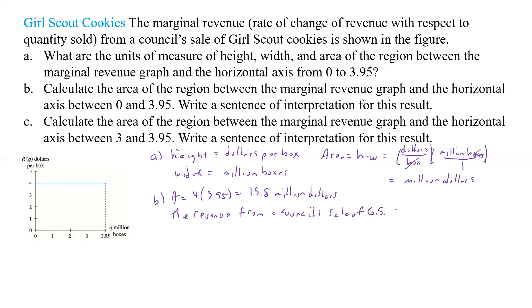So what does that mean? The revenue from a council sale of Girl Scout cookies from selling 3.95 million boxes of cookies is 15.8 million dollars. We need to include the specific number of boxes because that's what defines the interval we calculated over. So: we sold 3.95 million boxes of Girl Scout cookies and that gave us a revenue of 15.8 million dollars.